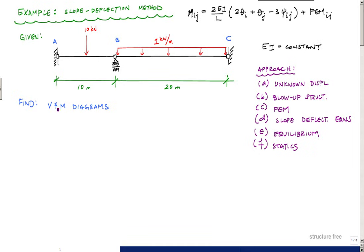The way I'm going to approach this problem to calculate the shear and moment diagrams is: (1) determine unknown displacements, which is really to determine the number of kinematic degrees of indeterminacy, and then (2) blow up my structure.